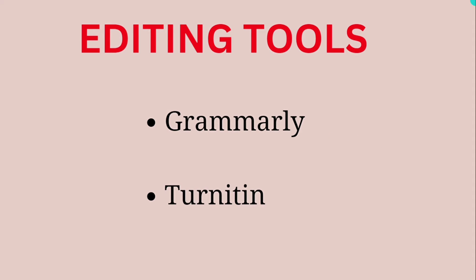Welcome to today's video. I'll be talking about two important tools we use in academic writing. These two tools are used to edit papers. In academic writing, you must be able to deliver 100% original work, and it should be free from grammar mistakes. We use Grammarly to check for grammar mistakes and Turnitin to check for plagiarism or copy-pasted work. Copy-pasted work is a big enemy in academic writing.